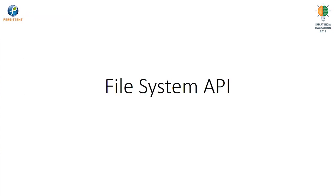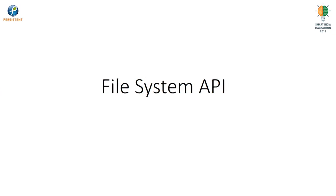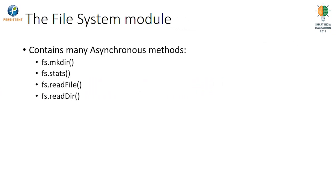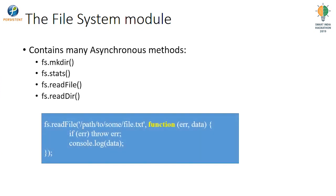Let us begin with the fs module. The fs module contains a lot of methods, some of which are listed here: fs.makeDirectory, fs.stats, fs.readFile, and so on. To make use of these asynchronous methods, we need to add the require statement for the fs module, as we already looked at in the previous session, followed by the method calls.